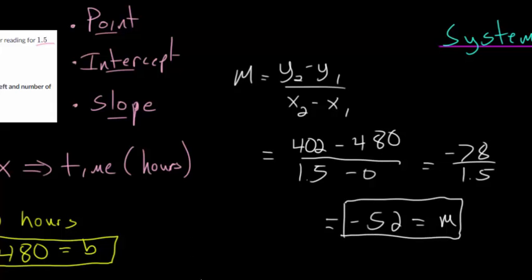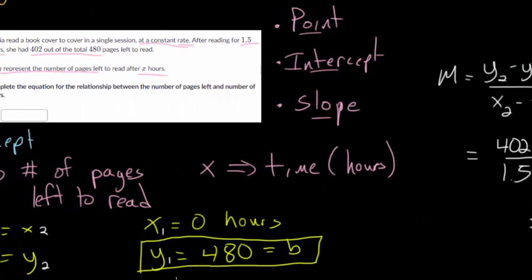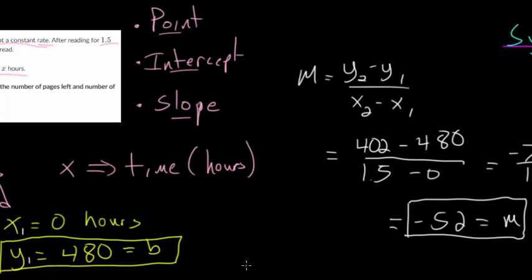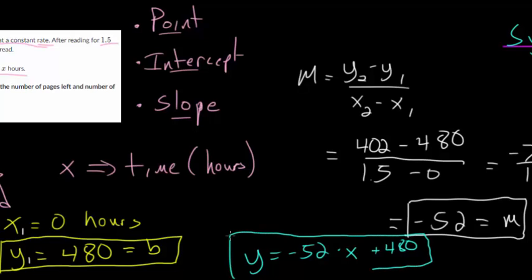So we can write our equation by just plugging in m and b. So let me just do that right here. y would be m, which is minus 52, times x, plus b, which is 480. And so this is what we think the equation is, and we're going to have to test it now based off the information that we were given, just to make sure it makes sense from what we were given.